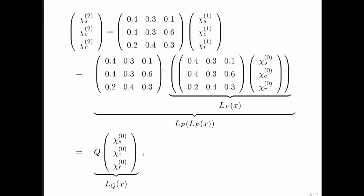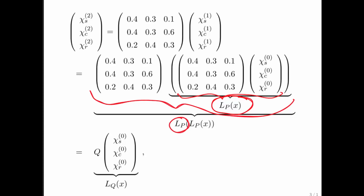Let's look at this differently one more time. What is really going on here is that we're applying some linear transformation to the vector x, and then taking the result and applying another linear transformation — which happens to be the same linear transformation in this particular example. What we're really doing is composing these two linear transformations. In this particular case, we're composing the linear transformation with itself. What we're going to see now is that there's a new vector function, L sub Q of x, that has the same net effect as first applying LP to x and then applying LP to the result of that.